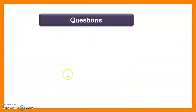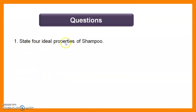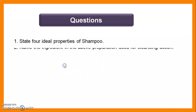Now we move to the question and answer session. Question 1: State four ideal properties of shampoo. A shampoo should be non-toxic, non-irritant, should not make the hands rough and chapped, should be easily removed from hair by rinsing with water, and it should be effective in a small amount.